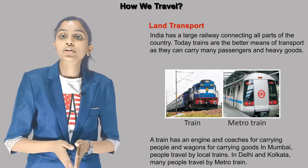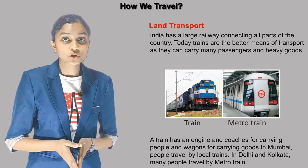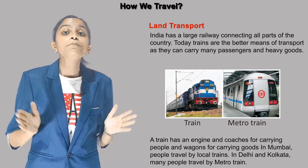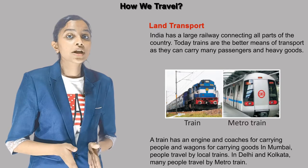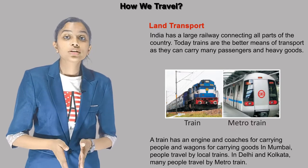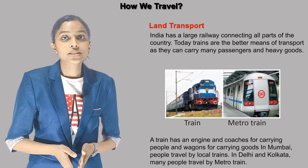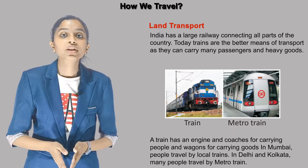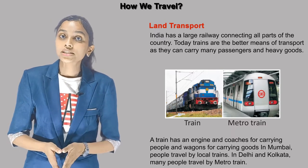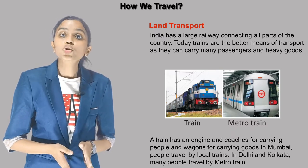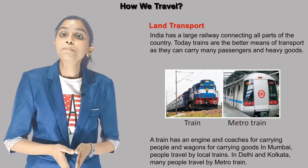India has a large railway connecting all parts of the country. Today, trains are the better means of transport as they can carry many passengers and heavy goods. A train has an engine and coaches for carrying people and wagons for carrying goods. In Mumbai, people travel by local trains. In Delhi and Kolkata, many people travel by metro train.